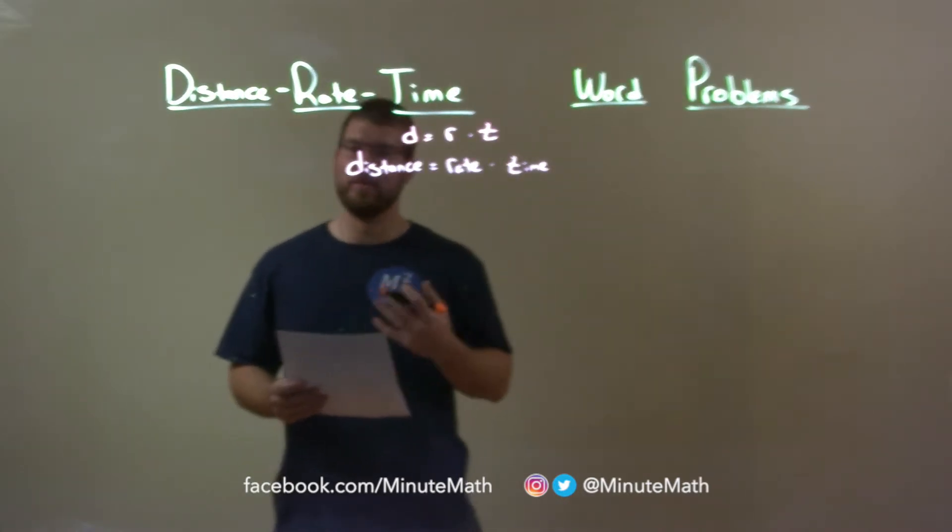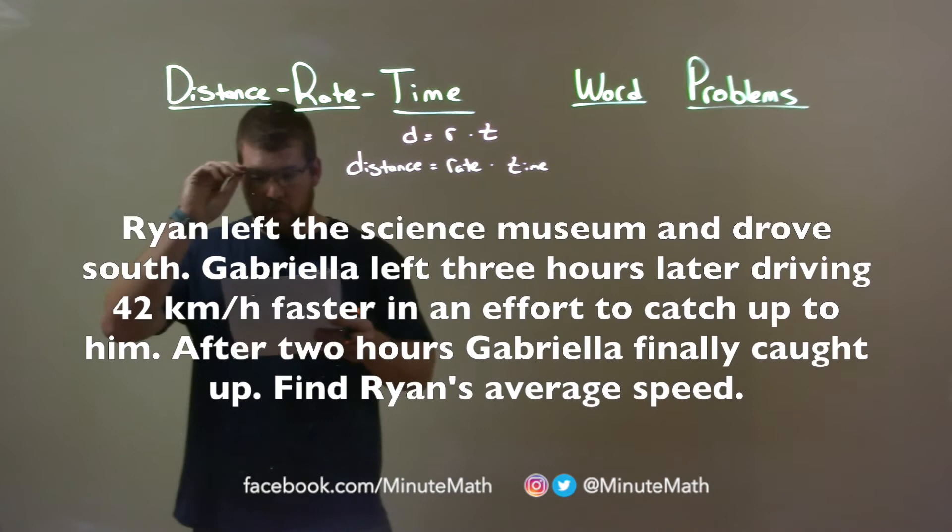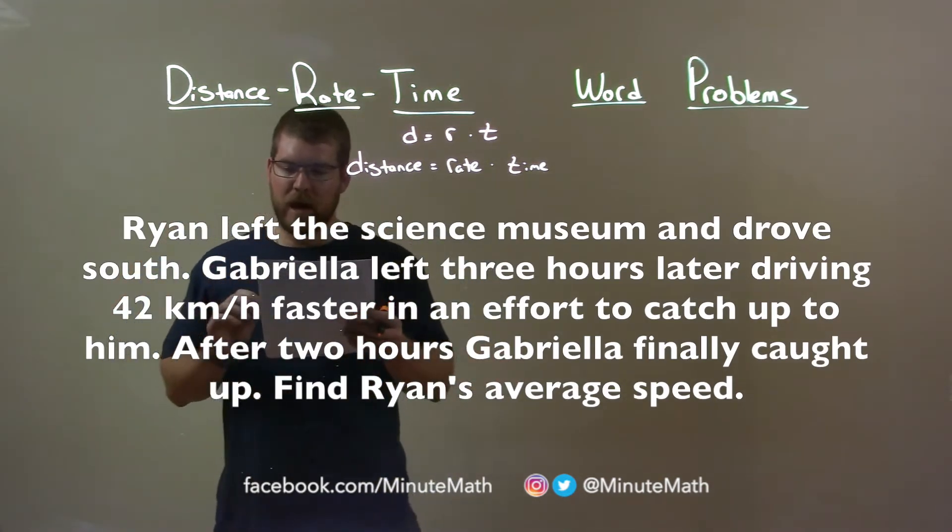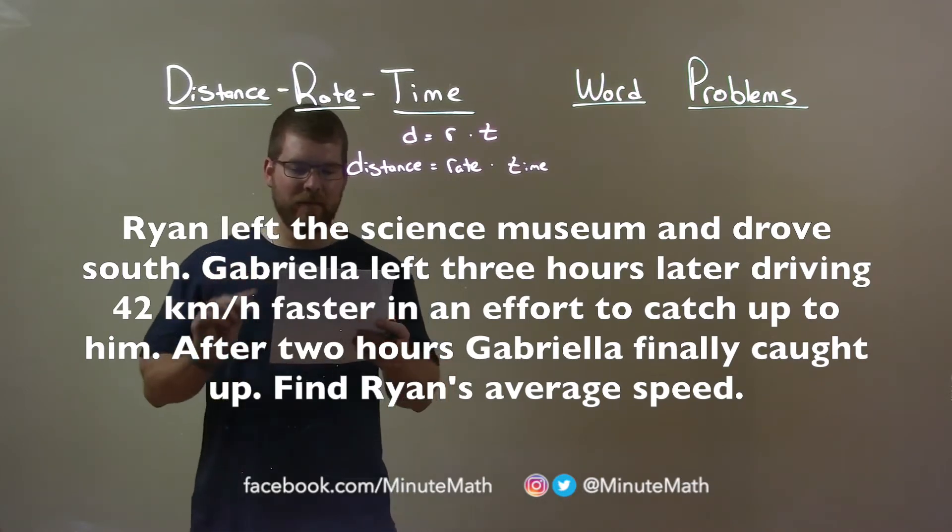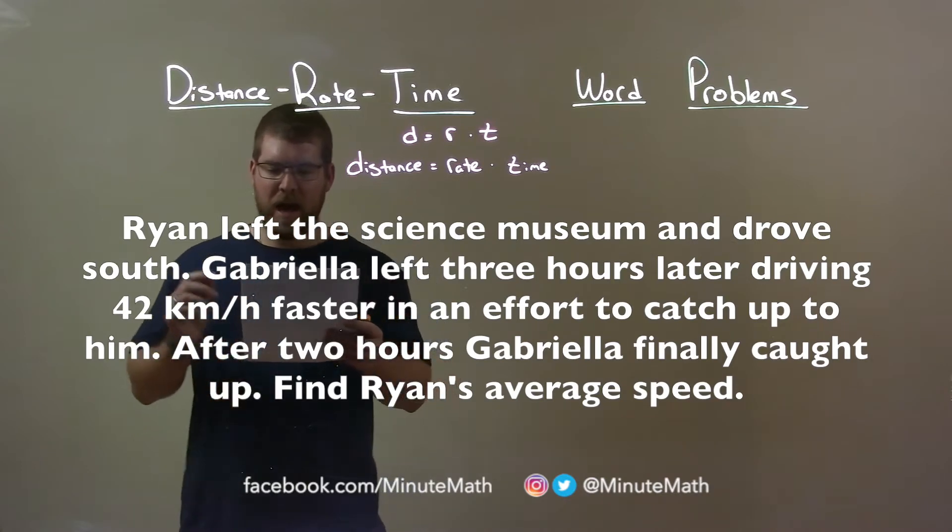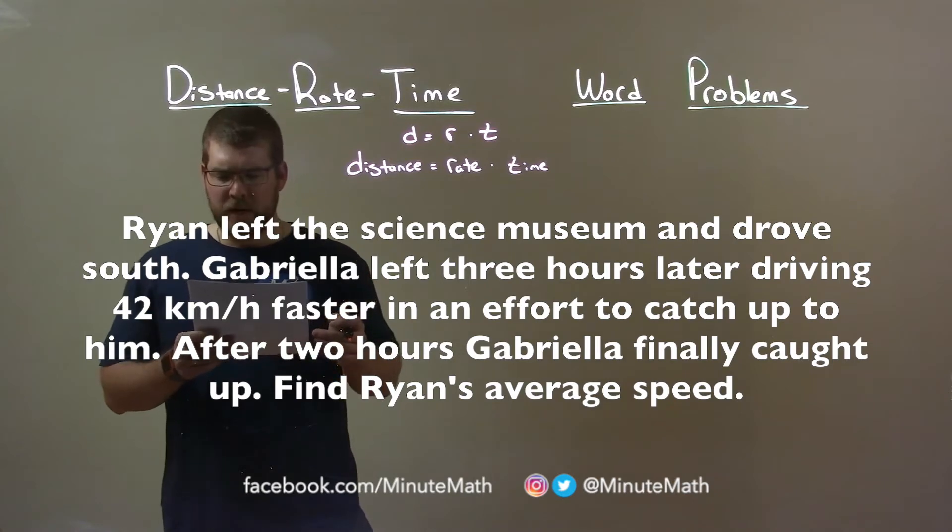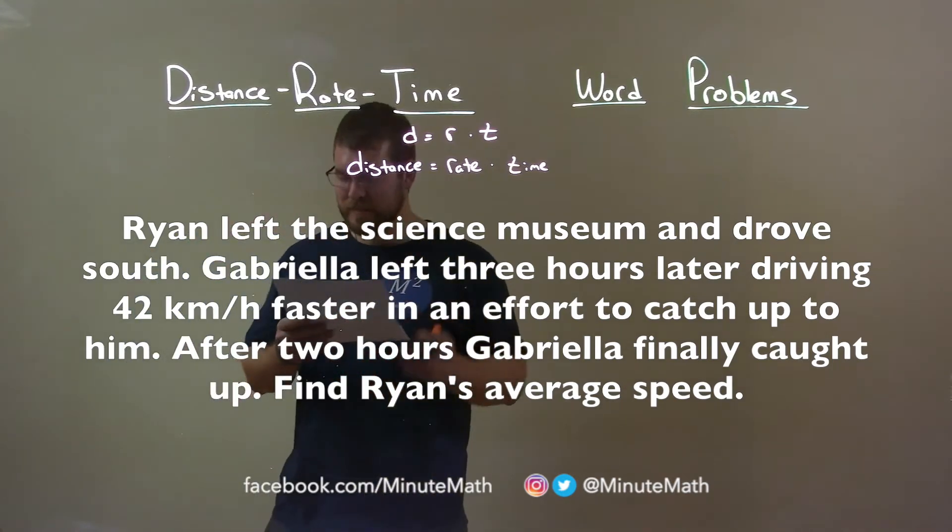If I was given this problem: Ryan left the Science Museum and drove south. Gabriella left three hours later driving 42 km per hour faster in an effort to catch up to him. After two hours, Gabriella finally caught up. Find Ryan's average speed.